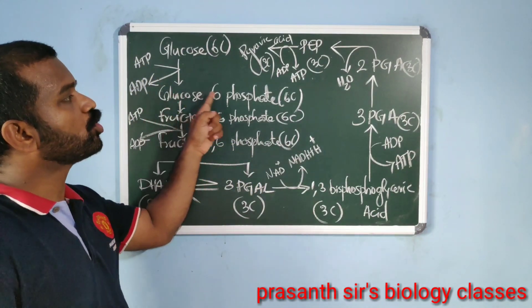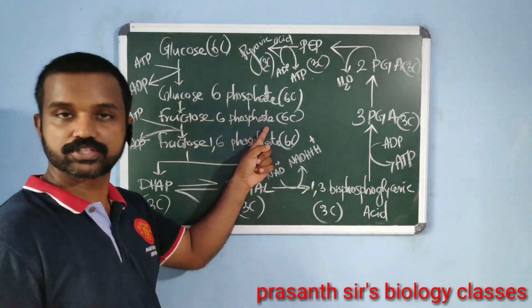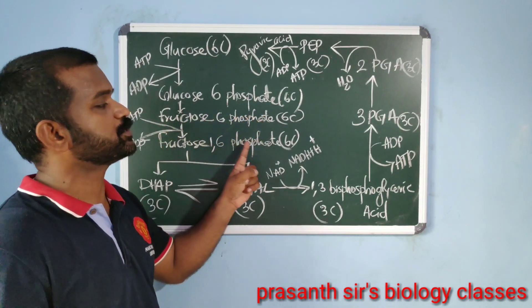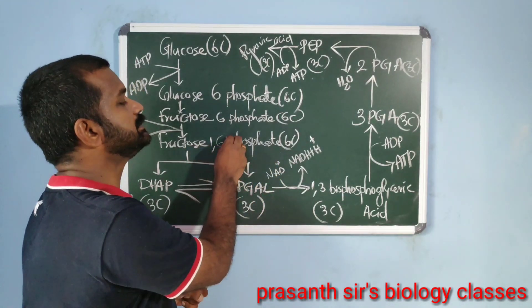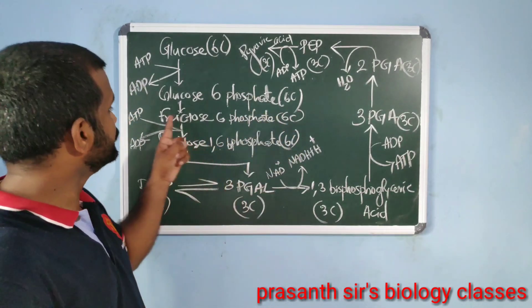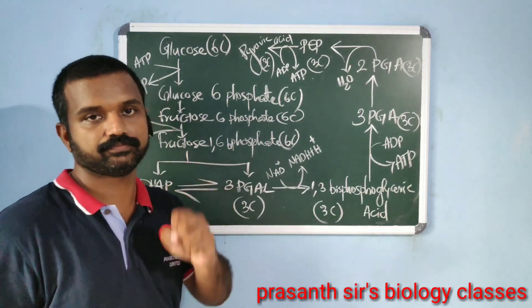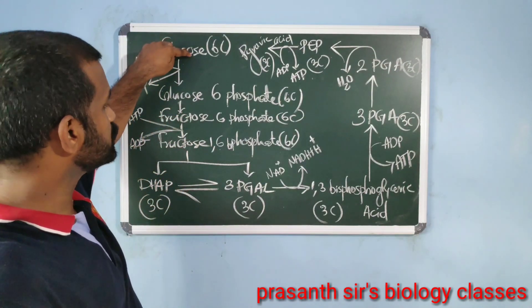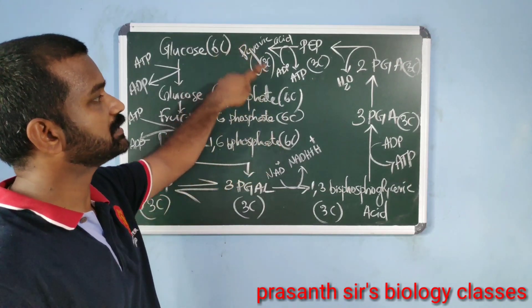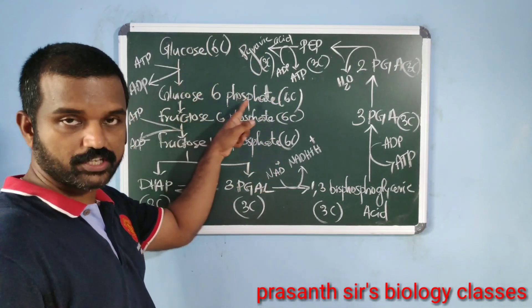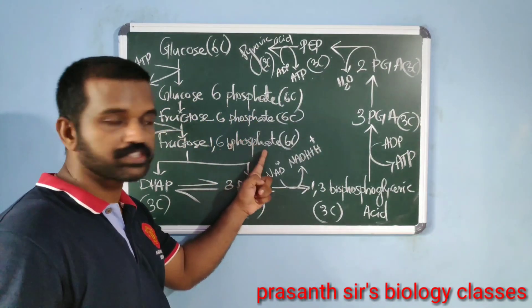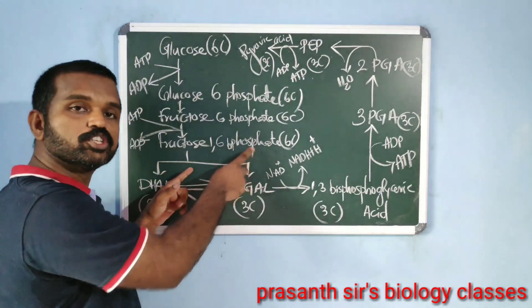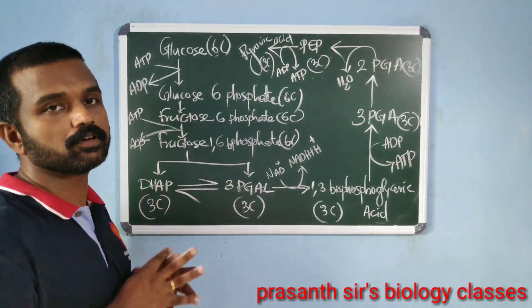Next, glucose-6-phosphate is isomerized into fructose-6-phosphate. Then fructose-6-phosphate becomes fructose-1,6-bisphosphate. In this step, ATP is also utilized and becomes ADP. So glucose, glucose-6-phosphate, fructose-6-phosphate, and fructose-1,6-bisphosphate are all 6-carbon compounds. In the next step, fructose-1,6-bisphosphate is split into two 3-carbon compounds: dihydroxyacetone phosphate and 3-phosphoglyceraldehyde (3-PGA). These two are interconvertible forms.